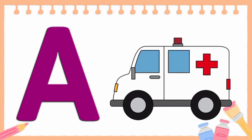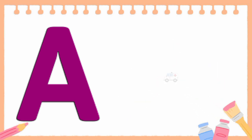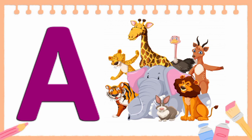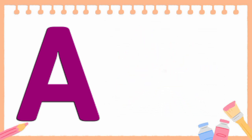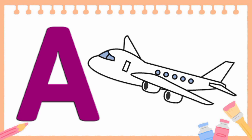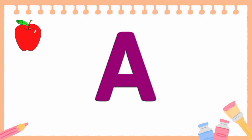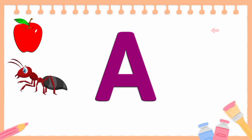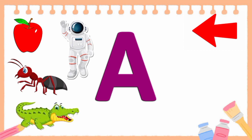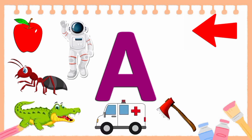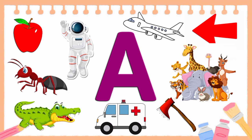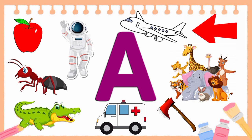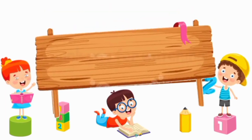A for ambulance, A for animals, A for airplane. Now let's see these words once again: apple, ant, arrow, astronaut, alligator, axe, ambulance, animals, and airplane. All these words begin with the letter A. Thank you for watching. For more educational videos, do like, share, and subscribe to our channel.